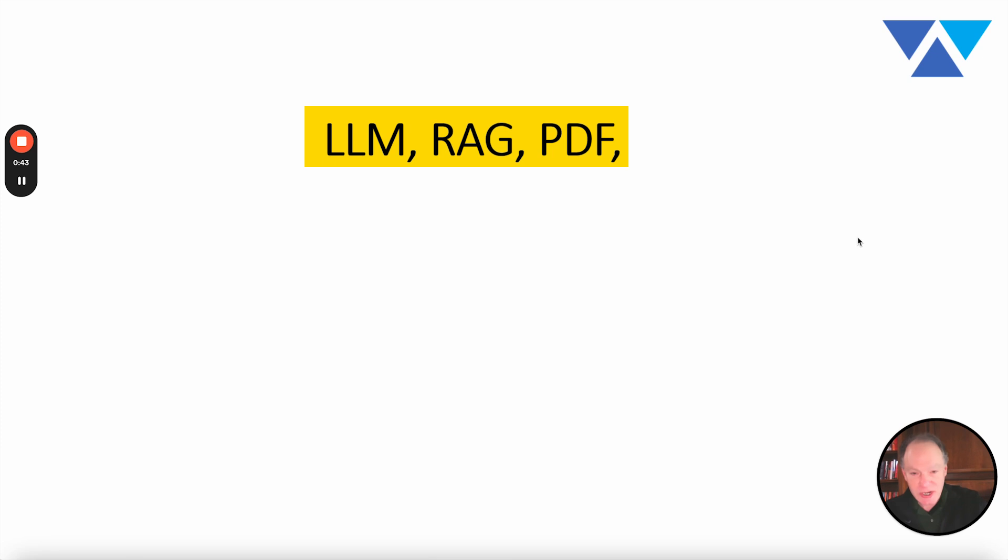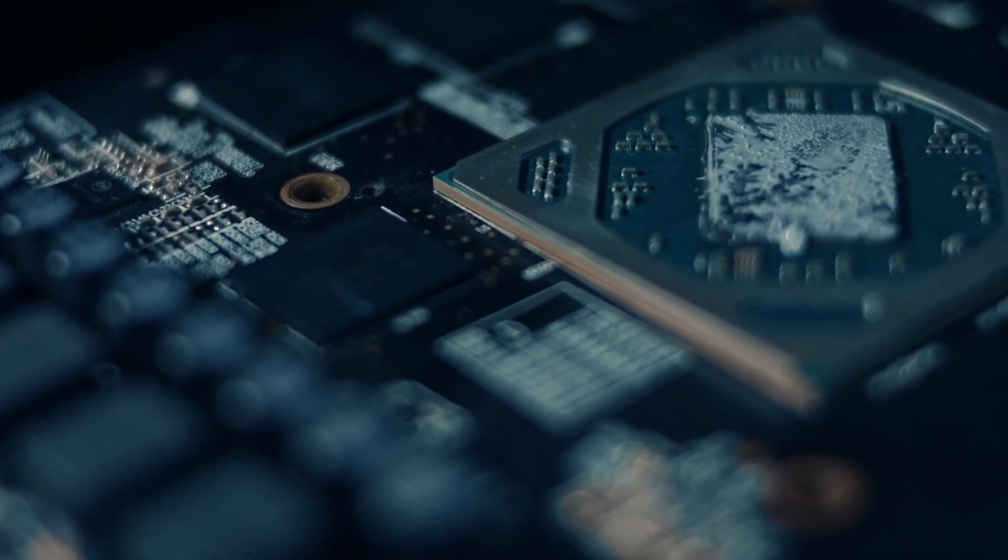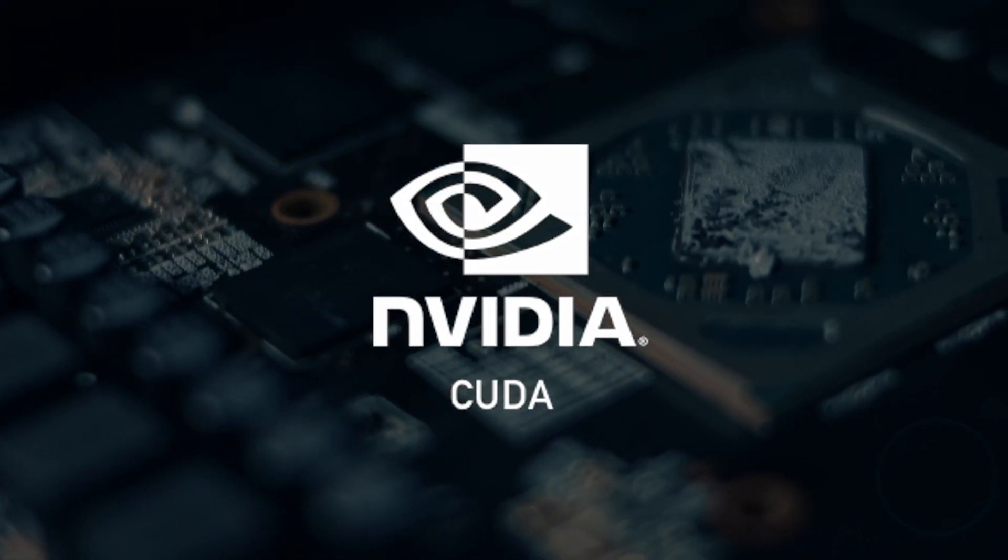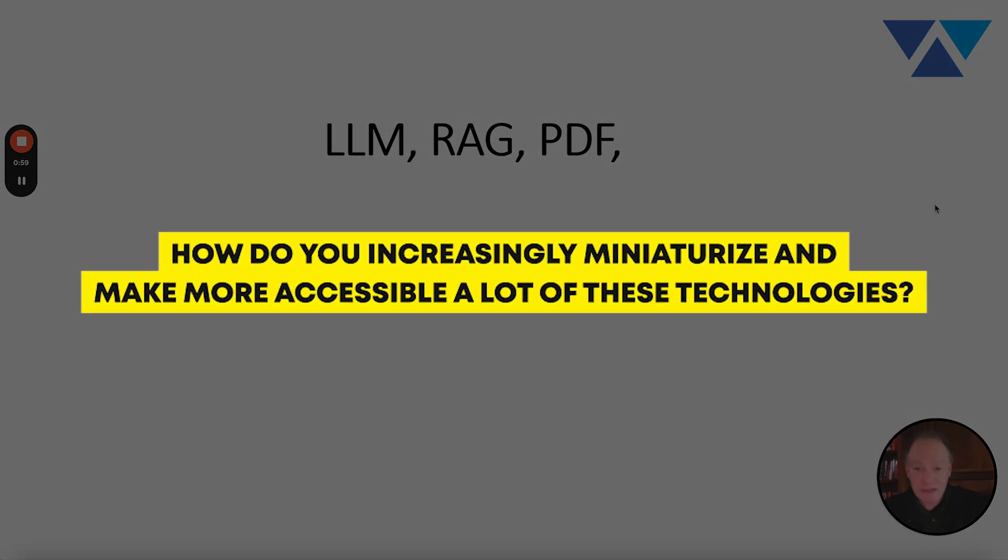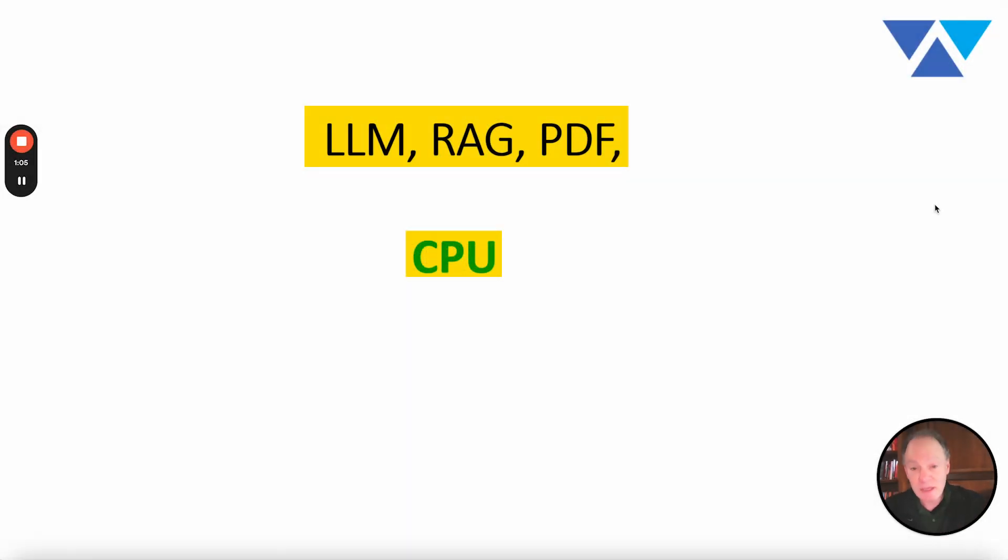One of the things that we've really tried to highlight with LLMware is another three-letter word, which is CPU. It's not that we don't like GPUs - we use GPUs for training all of our models, we use CUDA, we use GPUs for acceleration and inference. But we've been trying to miniaturize and make these technologies more accessible so they can be deployed cost-effectively and leveraged by a wider group of people. CPU is another three-letter word that increasingly we think is going to be really important to the future of LLMs in 2024.